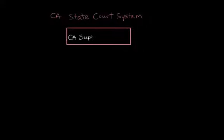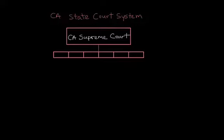Like the federal court system, every state court system has a high court that operates a lot like the United States Supreme Court — it grants certiorari to review the decisions of lower courts. It isn't always called the Supreme Court in every state, but in California it is called the California Supreme Court. Just like the federal court system, directly below the high court is an intermediate layer. In the federal system we call these circuit courts, but in California we call this intermediate layer the Court of Appeal.